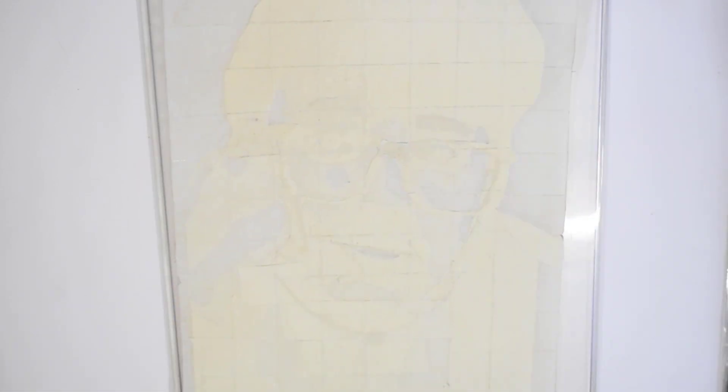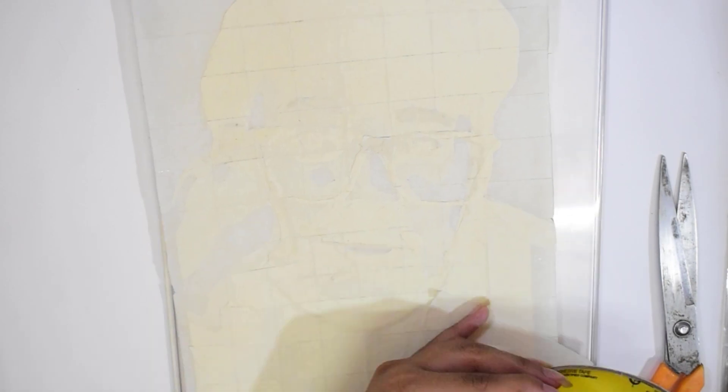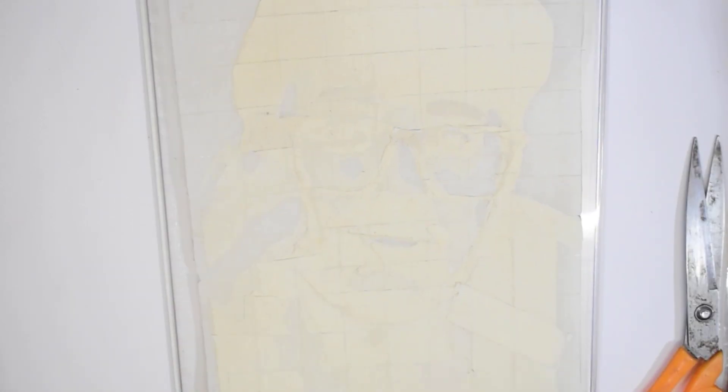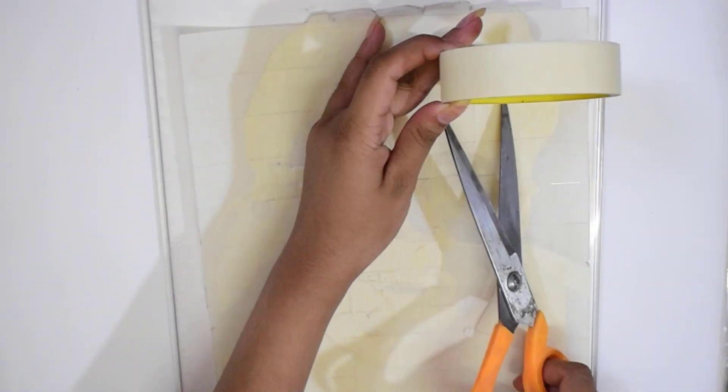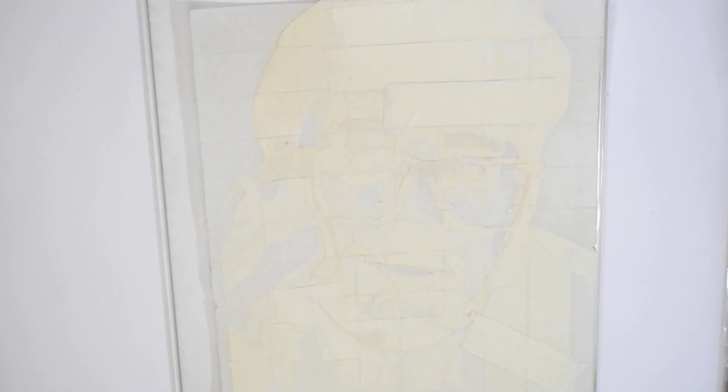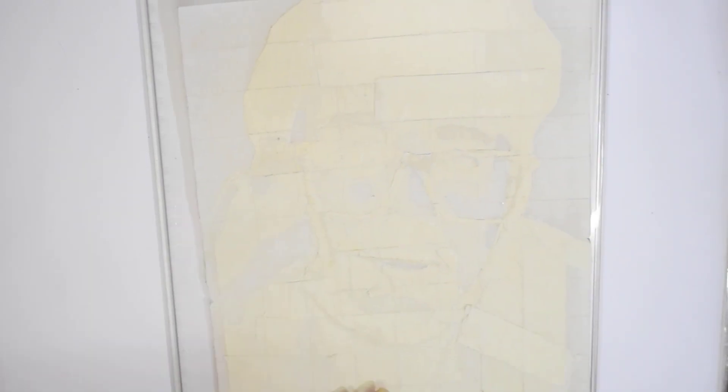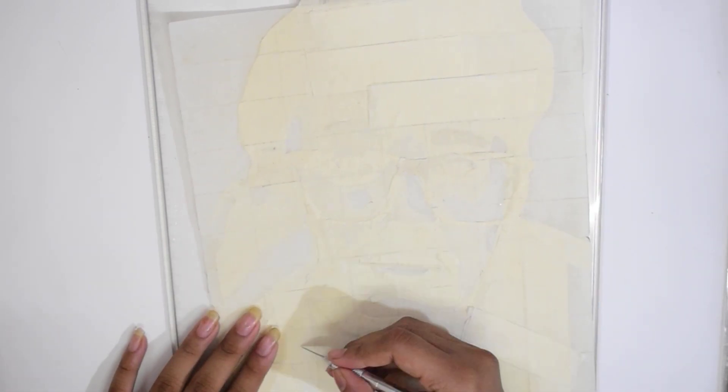I cut out the eyebrows and few other details separately, like the mustache and everything. Before working on the main artwork, I first did the digital work so that I would know where to place the shadows, the highlights, and everything.